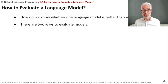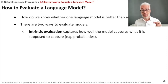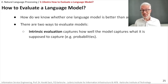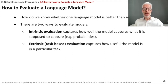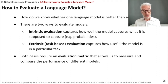In general, you have two different ways to evaluate these models. One way is the so-called intrinsic evaluation, which captures how well your model captures what it is supposed to capture — meaning how well it approximates these probabilities. The extrinsic evaluation is focused on a specific task, capturing how useful the model is for that particular task.